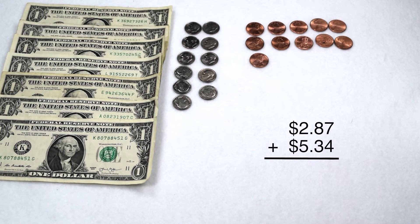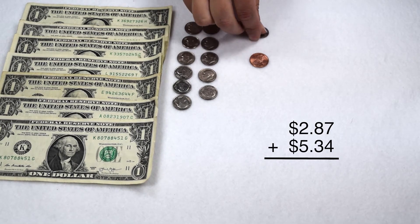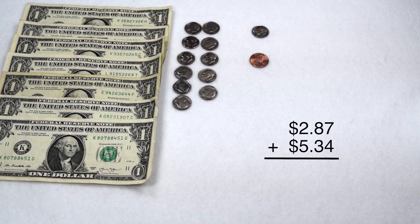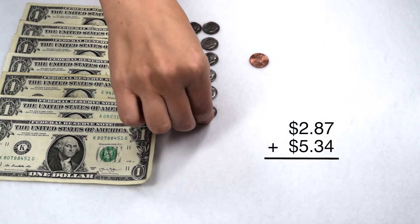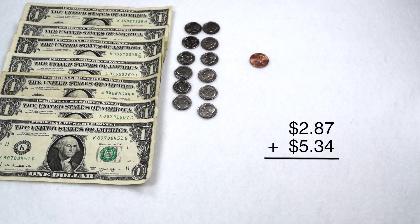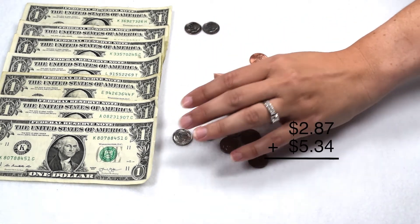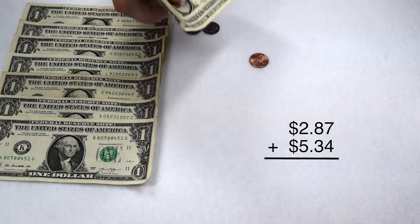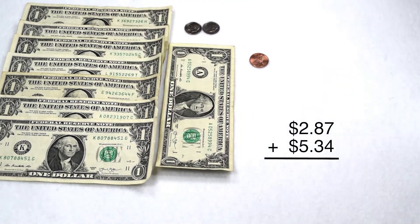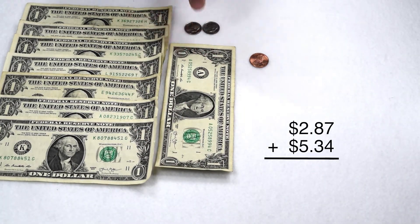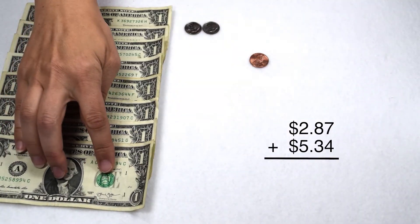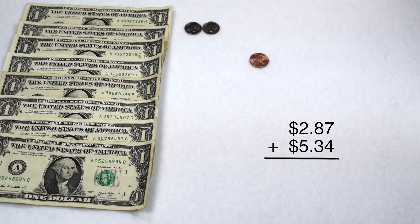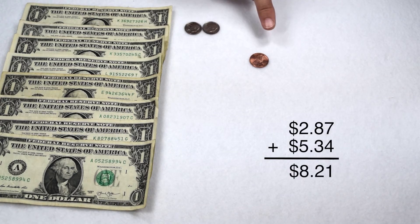I know I can group 10 pennies together and make one dime, but the dime doesn't belong in the pennies column, so I need to move it over to the dimes column. I know I can also group 10 dimes together to make $1. So I'm going to group 10 of my dimes together and change that into $1. I can't have my dollar in my dimes column, so I'm going to move that over. So after I've regrouped, we have a total of $8.21.